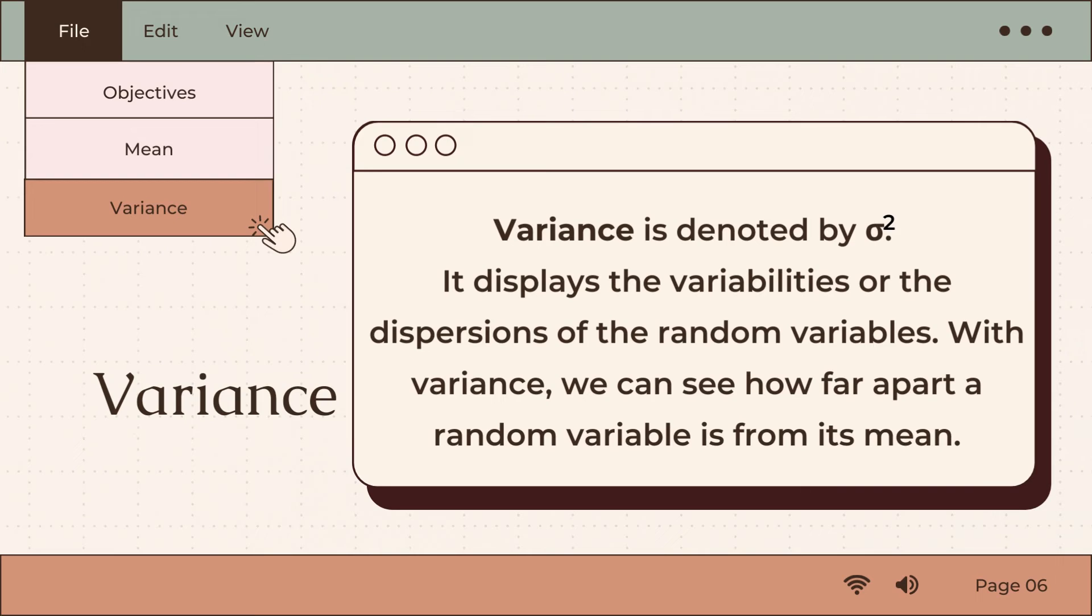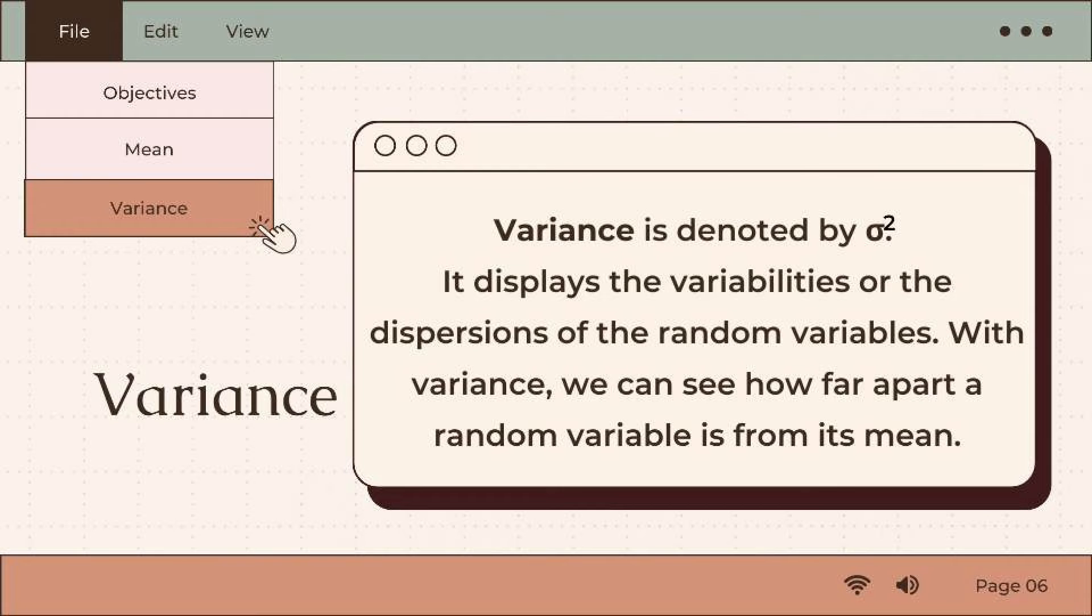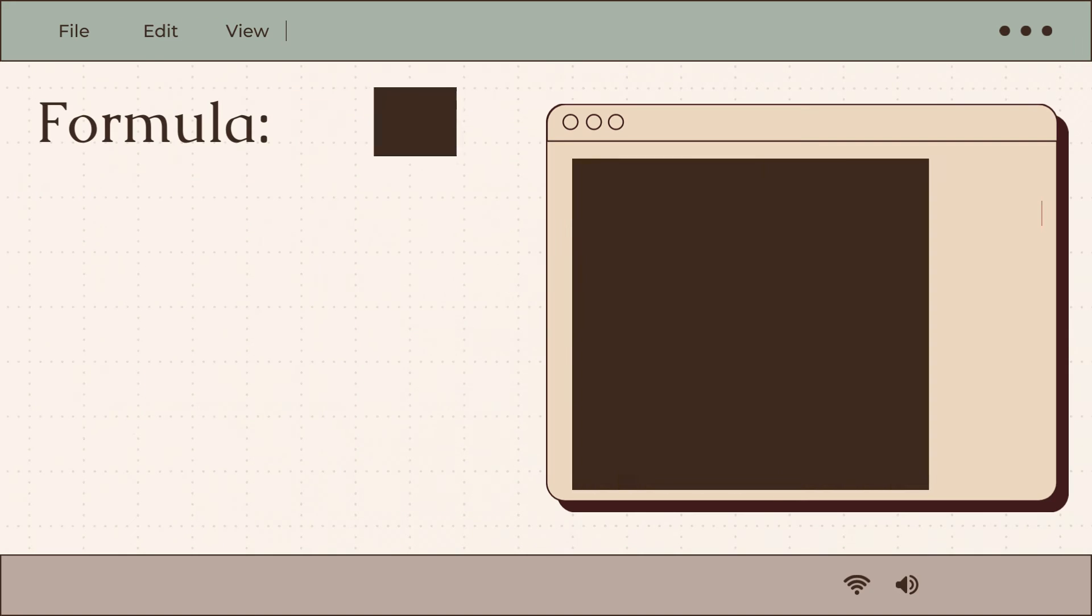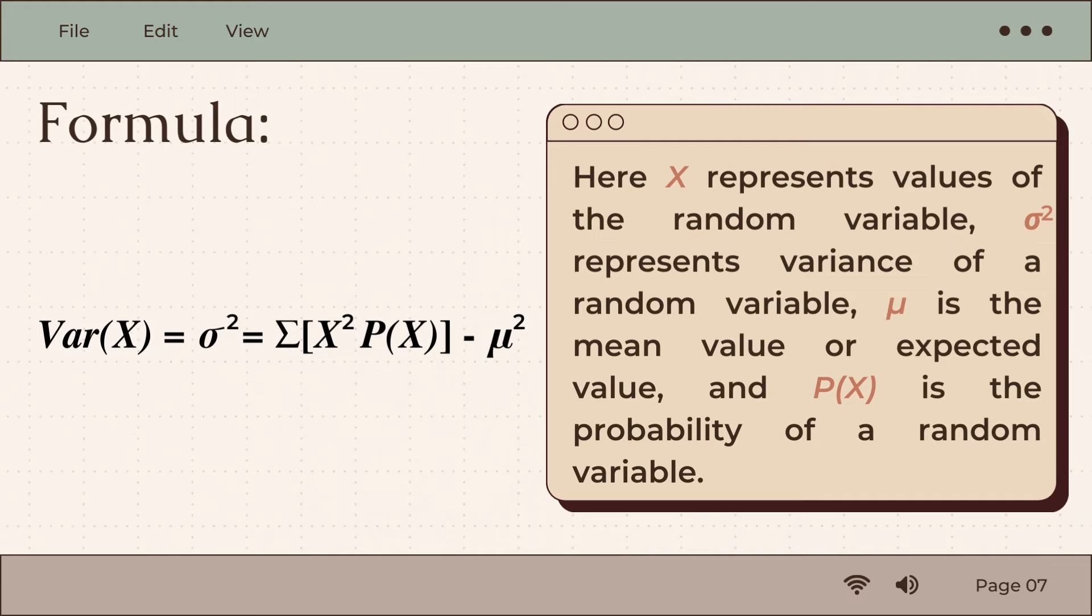Next, we are going to talk about the variance. Variance is denoted by sigma squared. It displays the variabilities or the dispersions of the random variables. With variance, we can see how far apart a random variable is from its mean. And this is the formula of variance.